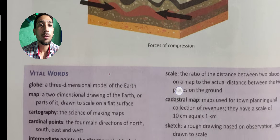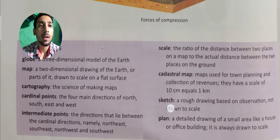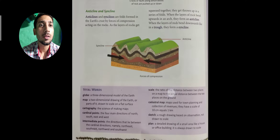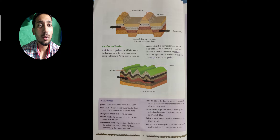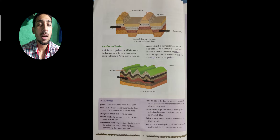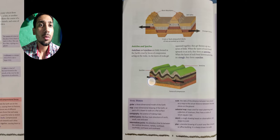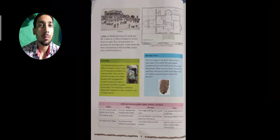Now we will go through some vital words and the chapter is essentially complete. I'll send you the question-answer, true/false, and fill-in-the-blanks exercises. Write them down in your copy, and after that we will start a new chapter. But before that, I want to give you a recap of this chapter.